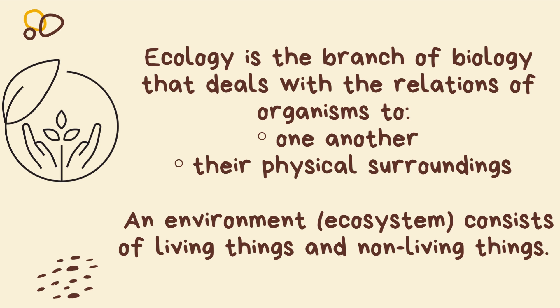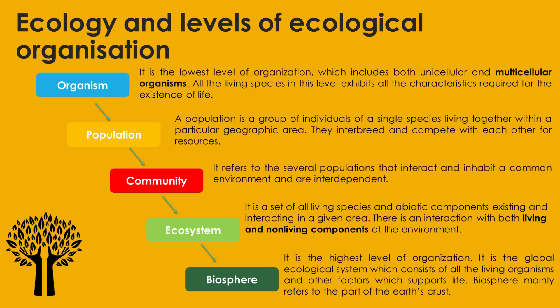This means that the ecosystem will consist of living things as well as non-living things. Now, ecology considers organisms at an individual, population, community, ecosystem, as well as biosphere level — so it considers it at five different levels.